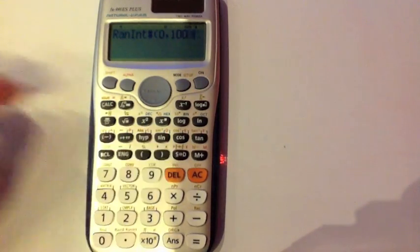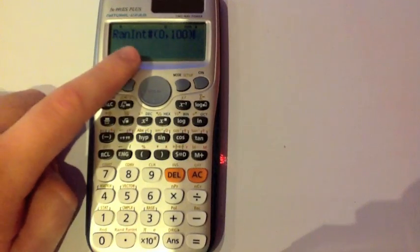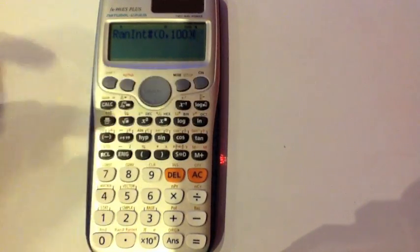And then press close brackets. So this is saying a random integer between 0 and 100, inclusive.